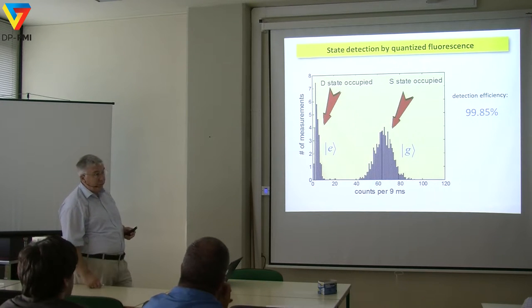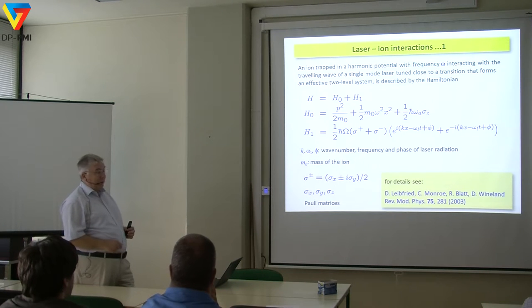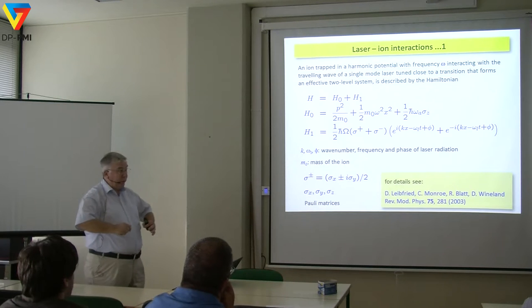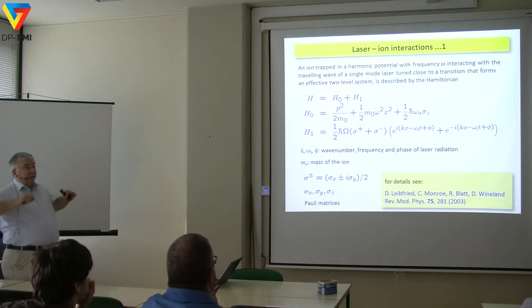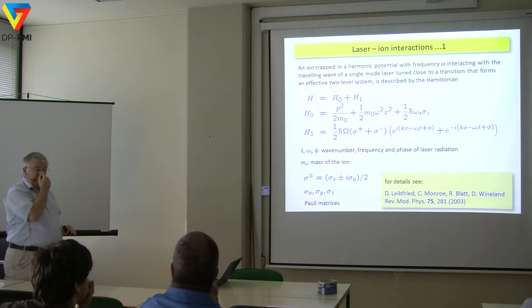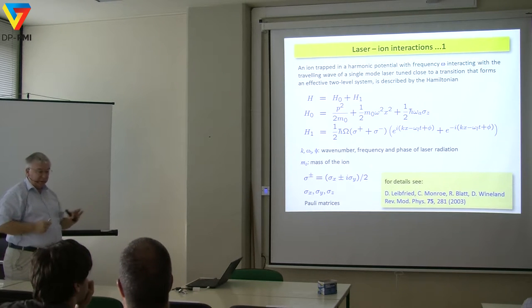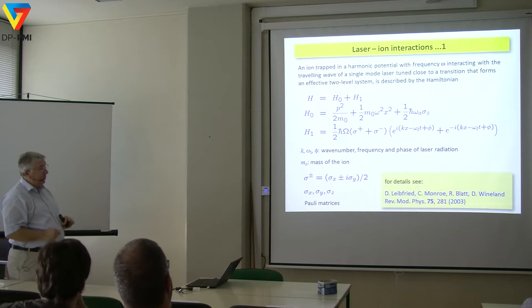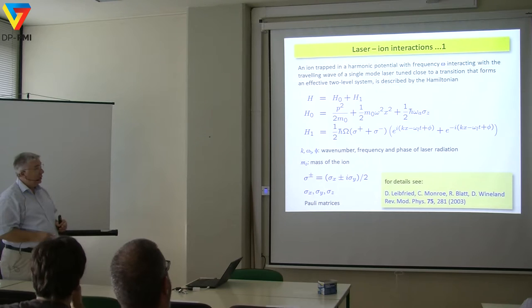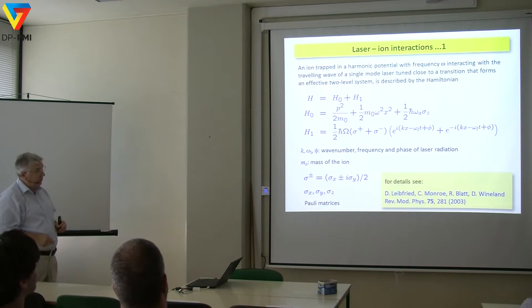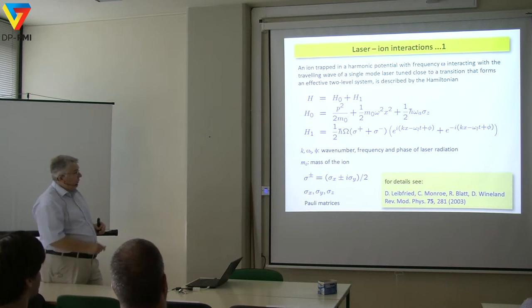Now comes a harder part. We have this ion sitting in a harmonic well — we have our two-level system — and we want to describe the interaction. We write down the kinetic term, the trap potential, and the internal degree of freedom. Rewriting in terms of raising and lowering operators, we have the laser field with wave number k, frequency, and phase. This is the interaction term, where these are the Pauli operators we have.